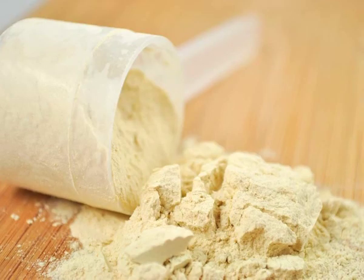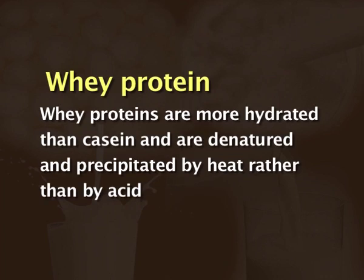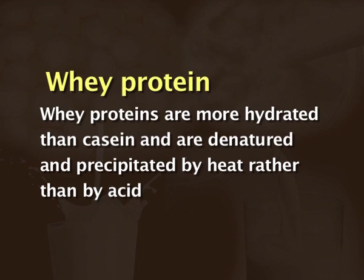The remaining 20 percent of milk protein is the whey proteins. The important whey proteins are lactalbumin, lactoglobulin and immunoglobulins. Whey proteins are more well-hydrated and cannot be separated from milk upon acidification, but they coagulate when heated to very high temperatures. They have very good biological value and can be separated commercially by the ultrafiltration or diafiltration technique.